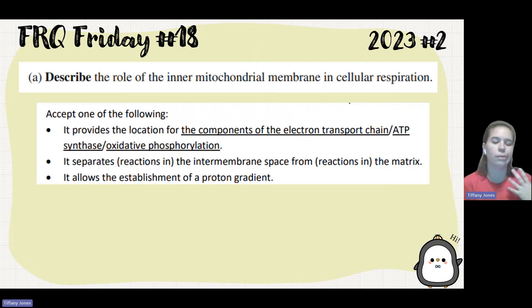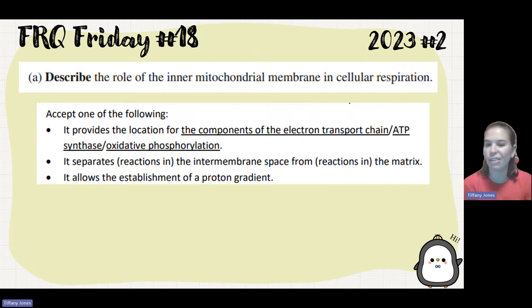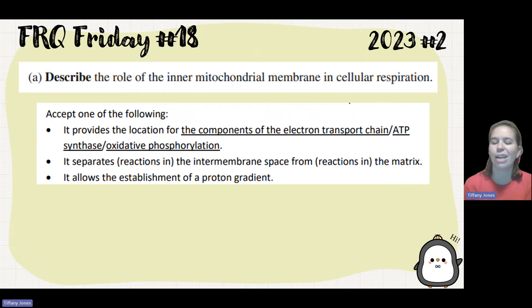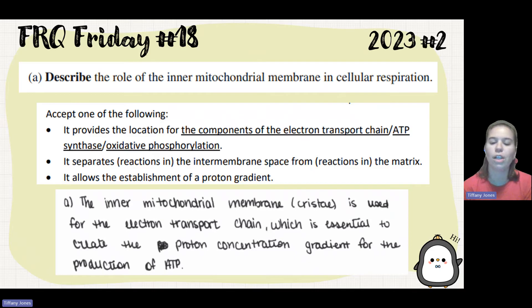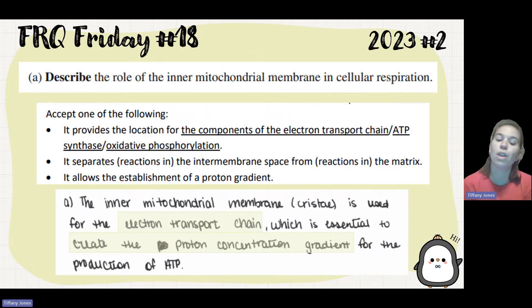According to the scoring guidelines, the answer should provide the location: the inner mitochondrial membrane separates reactions of the intermembrane space from reactions in the matrix and establishes the proton gradient. A strong student response would say the cristae is used for the electron transport chain, which is essential to create the proton gradient for the production of ATP.